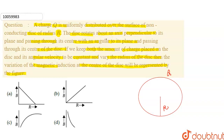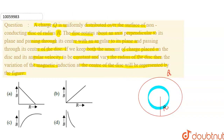When charge rotates, a magnetic field will be generated. So here we consider an elementary ring. The radius of this ring is small r and the thickness of this ring is dr.